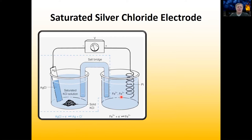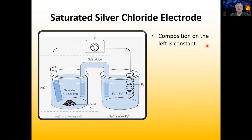If instead electrons come from the right into the left, we've neutralized the silver on our bar and chloride ions pop off. Now we have extra chloride ions in solution, so some will complex with potassium and crash out at the bottom. By having this saturated solution, we are keeping the concentration on the left constant. To restate: the composition in the left is constant; the cell potential changes depend only on the right.